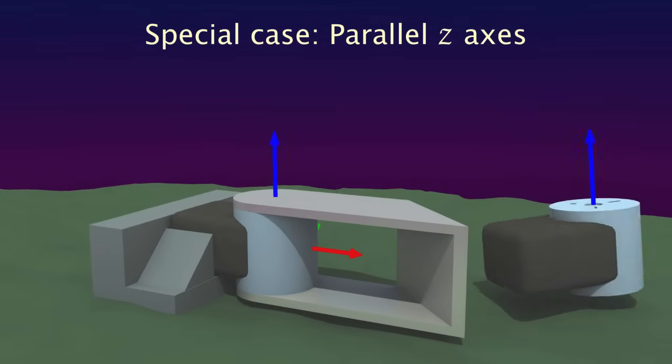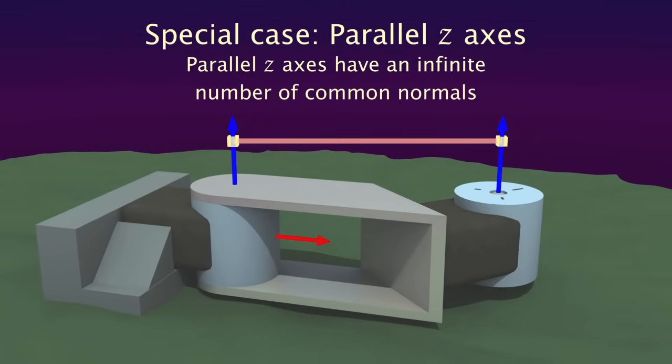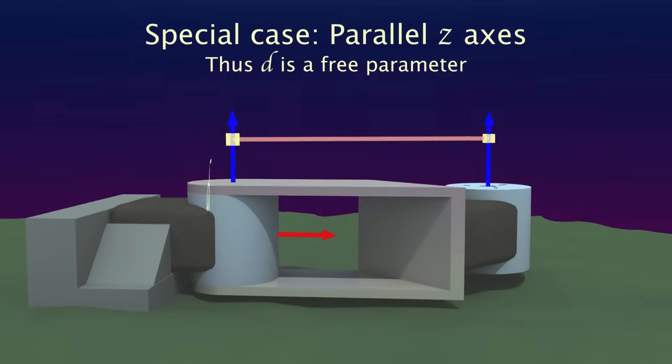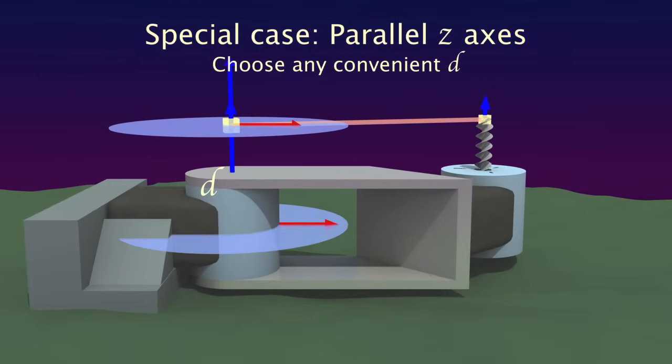Now there is one special case, when the z-axes are parallel. Because parallel lines have an infinite number of common normals, you can choose any d value you like in order to place the new origin at a convenient location, such as the center of a link or the tip of an end effector.